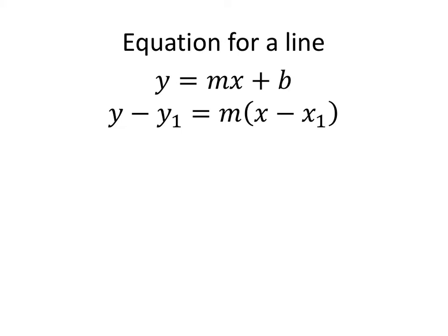First, a reminder about equations of a line. You have slope-intercept form, y equals mx plus b, and point-slope form, y minus y1 equals m times x minus x1. You'll also see it sometimes with that y1 added to the other side, so it looks like a translation.